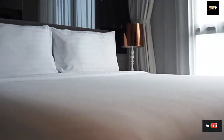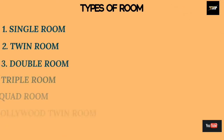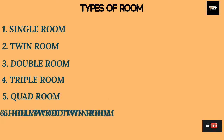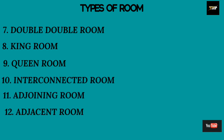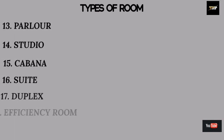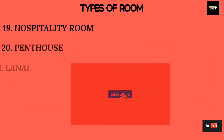Hello friends, welcome back to our YouTube video. Today we will learn the different types of rooms available in a hotel. The room types are: single room, twin room, double room, triple room, quad room, Hollywood twin room, double double room, king room, queen room, interconnected room, adjoining room, adjacent room, parlor, studio, cabana, suite, duplex, efficiency room, hospitality room, penthouse, and lanai.